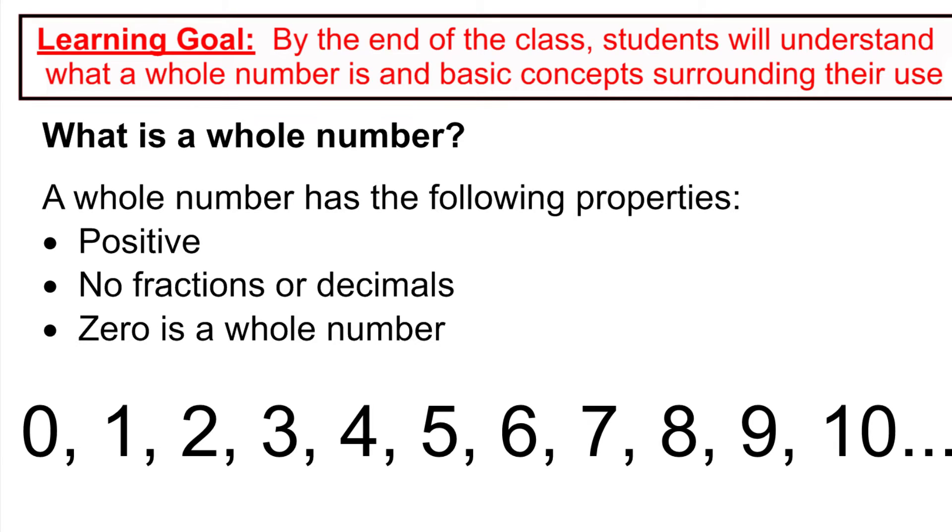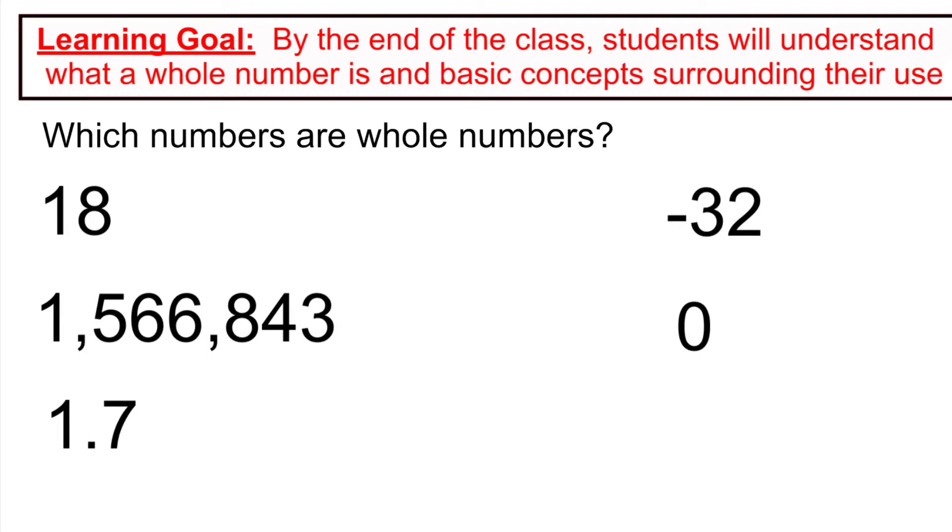As long as they fit these criteria, they are positive or zero, and they don't have any fractions or decimals, we're going to count them as a whole number. So, just taking a look at this list, if we were trying to determine which numbers are whole numbers based on what we just said, we would say, let's take a look at the list, 18.